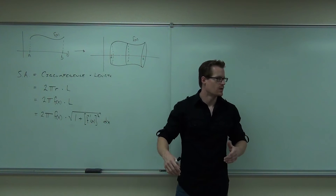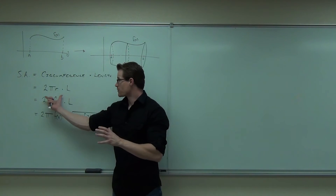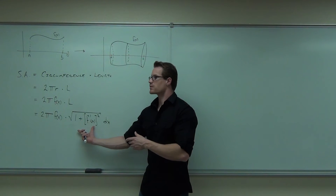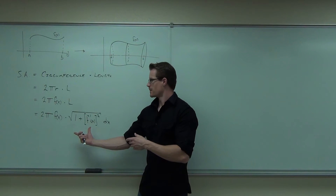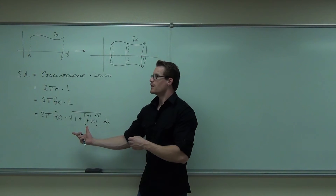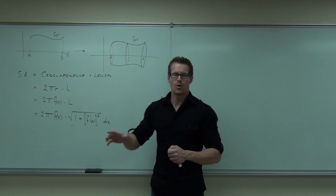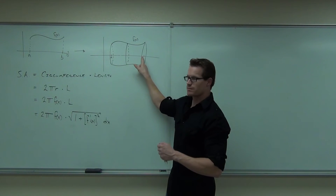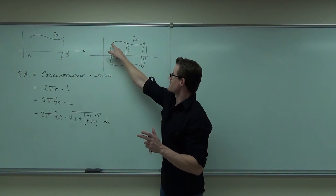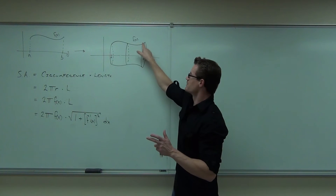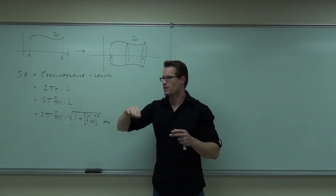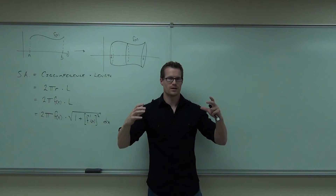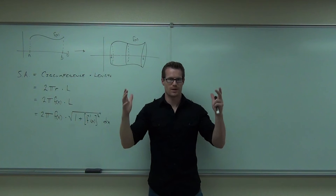Do you feel okay with the idea of the circumference — 2πr where r is f(x) — times the length? Why couldn't you just use the bounds to find the length? That's a great question. His question is: why can't you use just the distance from a to b? Well, a straight line is the smallest distance between two points. Is that a straight line? This distance is not just b minus a — it goes up, it goes down, it's longer than that. I can't use b minus a because that would imply I actually have a cylinder. I do not.